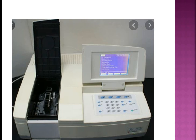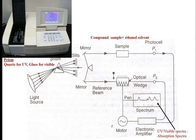We can see the lambda max in the spectrum. In the schematic diagram, there is a light source, then a prism, then slits. One cuvette holds the sample and another holds the reference solvent only. Photocells P1 and P2 detect the light and produce the spectrum.